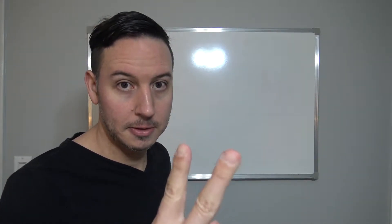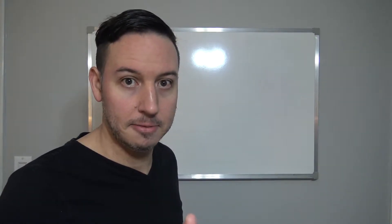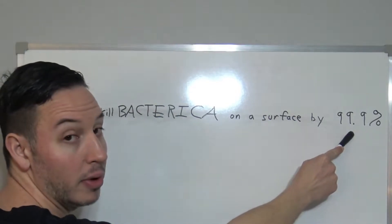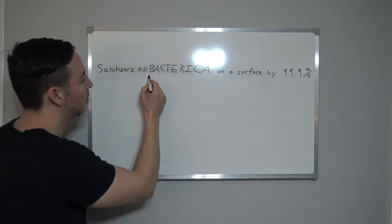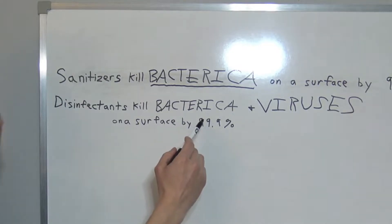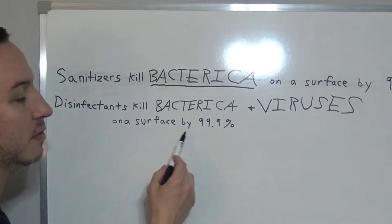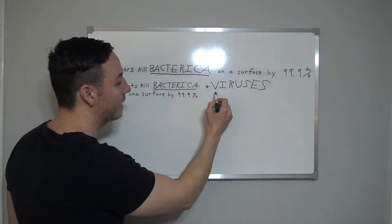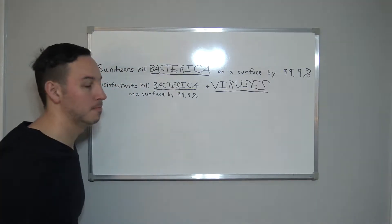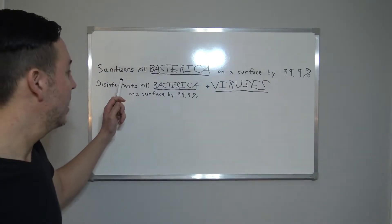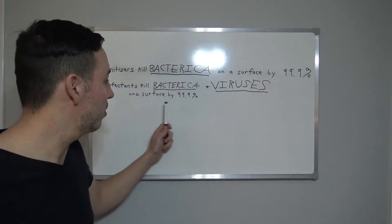To make this super simple, I've got a whiteboard. Here's the difference: sanitizers kill bacteria on a surface by 99.9% — keyword: bacteria. Disinfectants kill bacteria and viruses on a surface by 99.9%. Disinfecting is sanitizing on steroids — it's more powerful. Sanitizing can't kill viruses; disinfecting can kill both. In both situations you're reducing the amount of germs present.